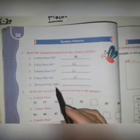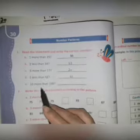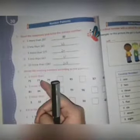Now 10 more than 198. 10 more means you have to add 10 to 198, then the answer will be 208. Now write the missing number according to the pattern: 2 more than 75, 76, 77, then 78, 79.